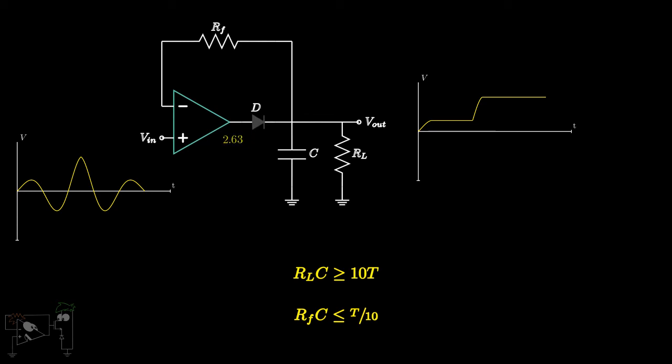If you recall, we solved this problem when we built the precision half-wave rectifier by introducing another diode. If we connect a diode in this way, then D1 prevents the op-amp from saturating and keeps the op-amp output at zero potential when Vn is less than the peak voltage.